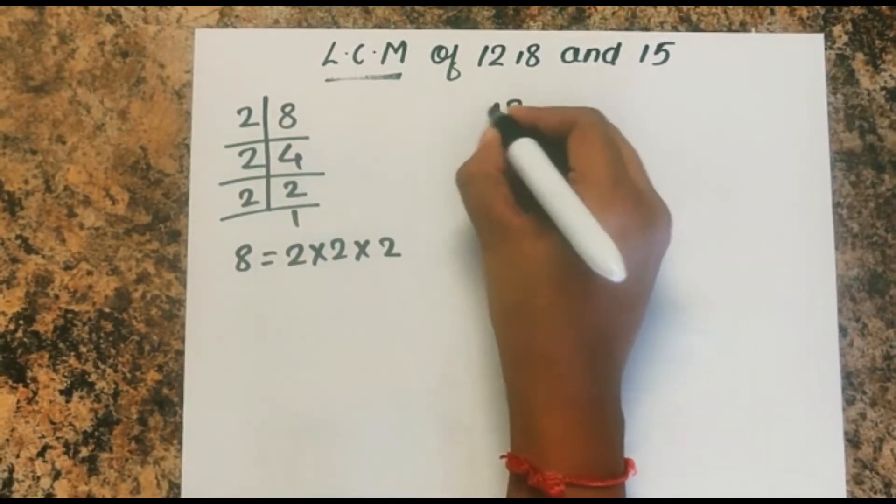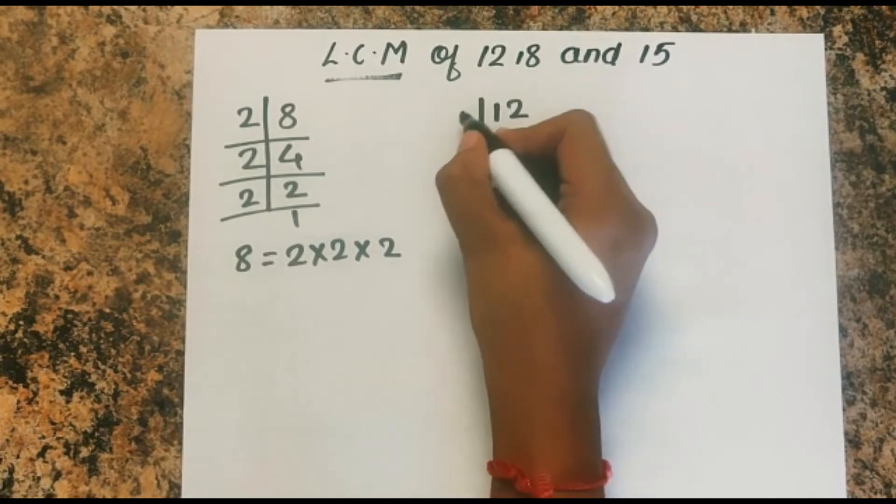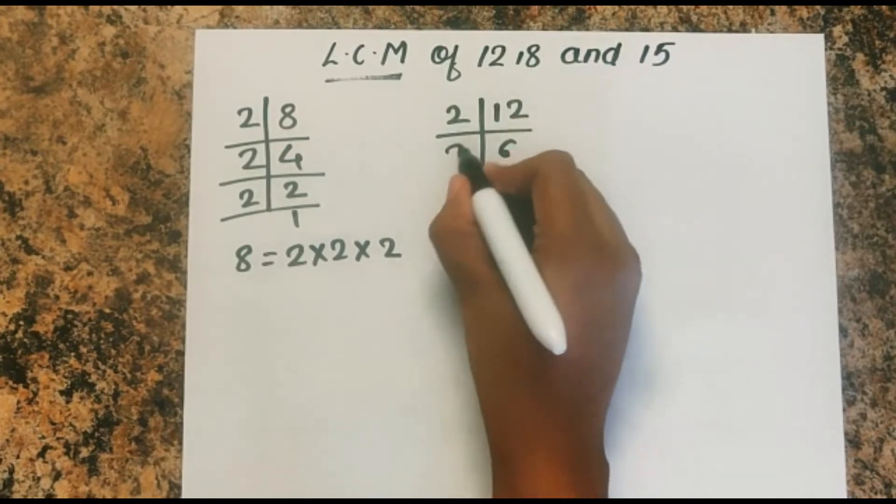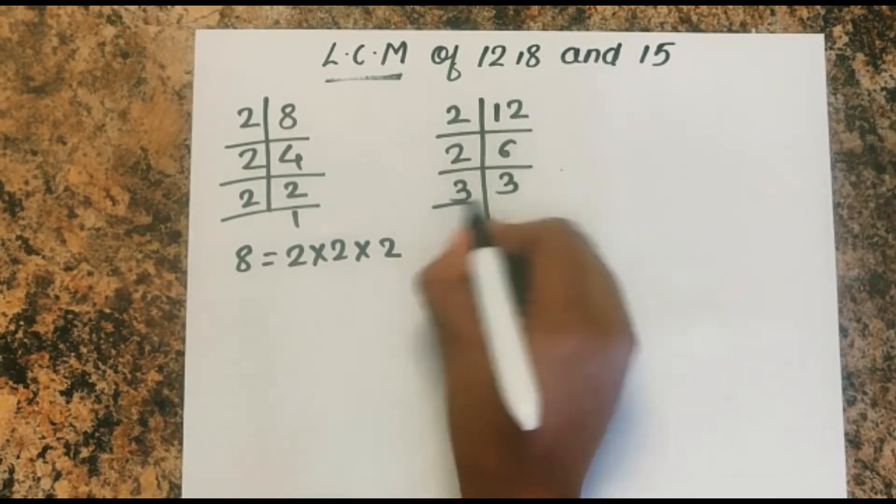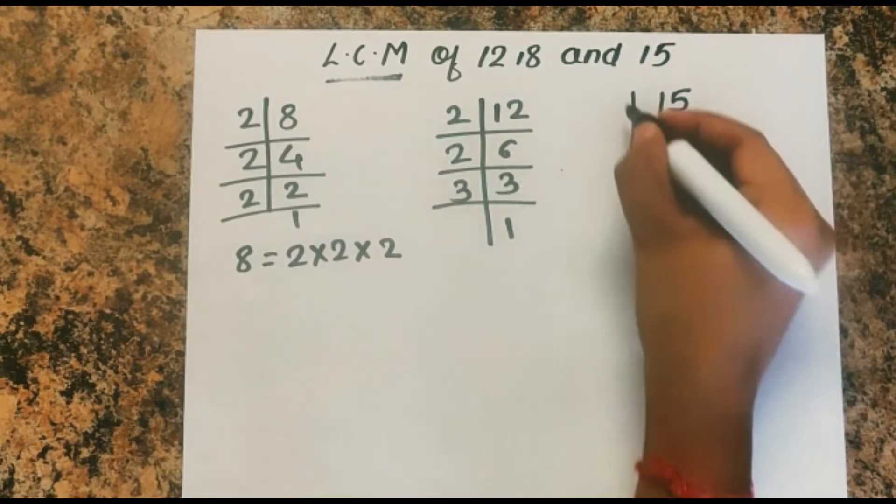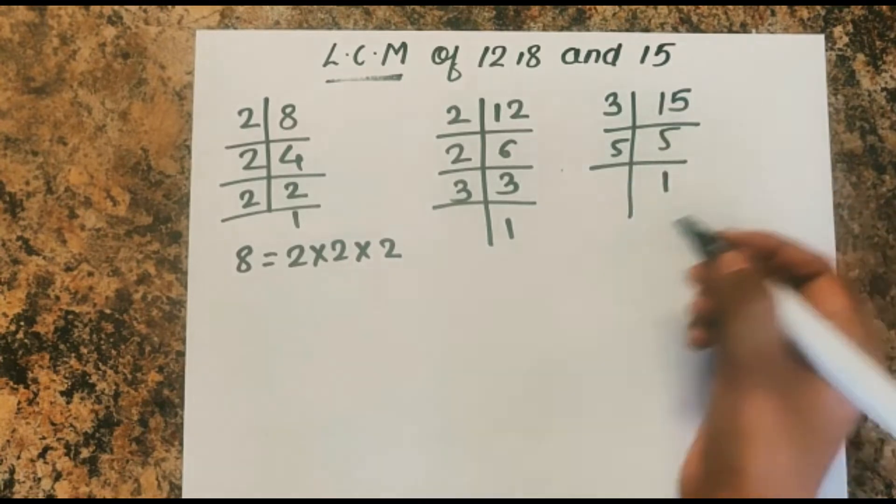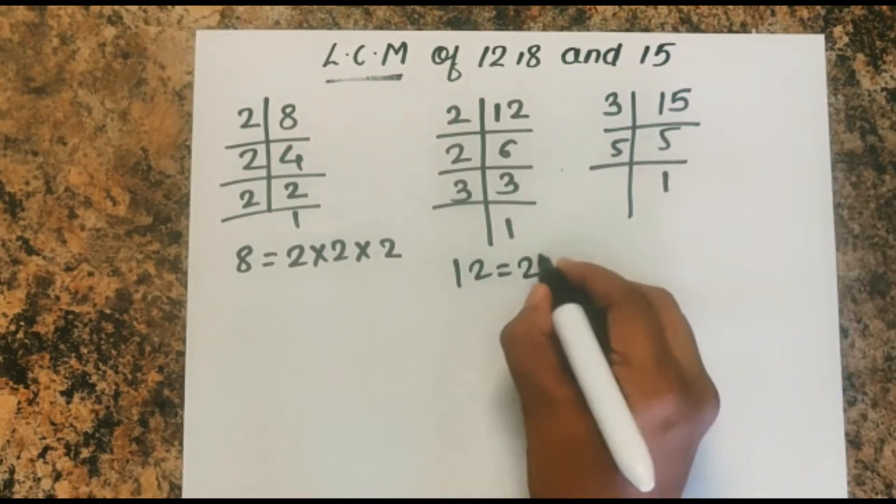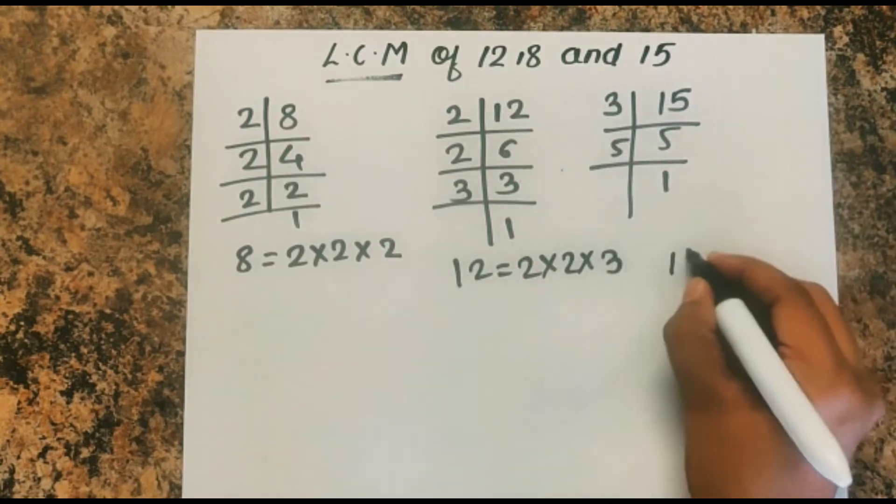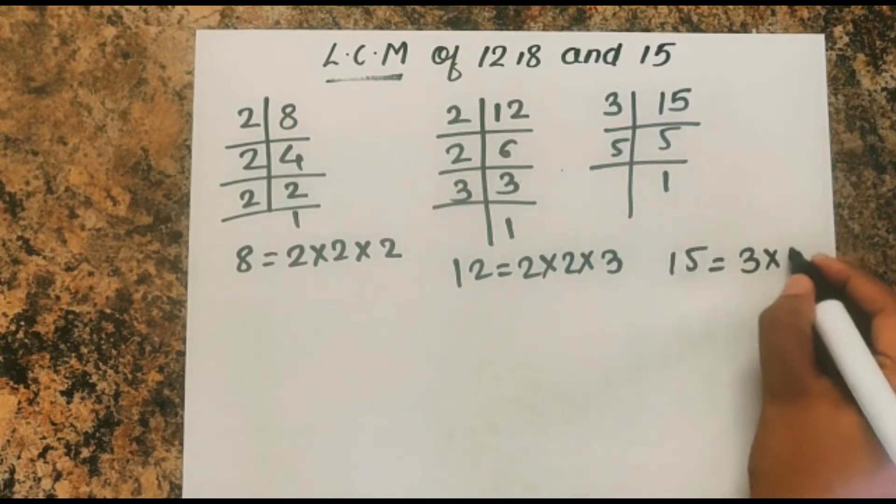Then we have 12, which is 2 into 2 into 3. And then we have 15. 15 is equal to 3 into 5.